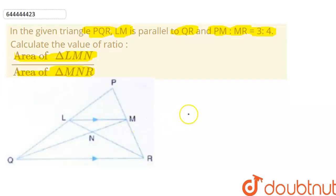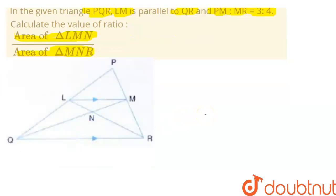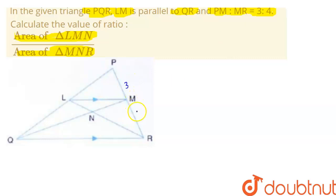Let us focus on the diagram. In this question, LM is parallel to QR as shown in the figure. We are given that PM upon MR is 3:4, so this side is proportional to 3 and this side is proportional to 4.